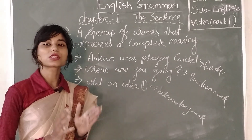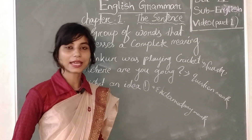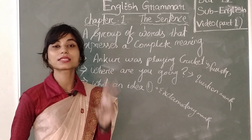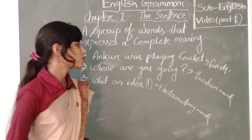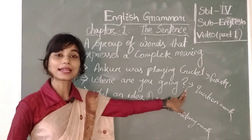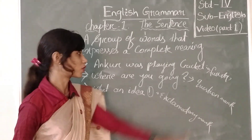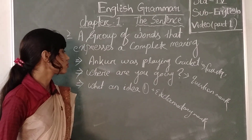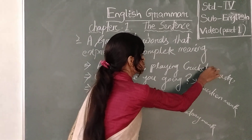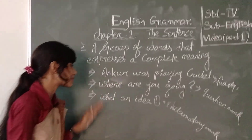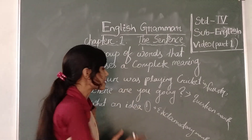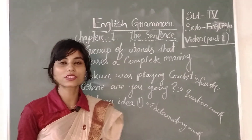If a sentence starts with a WH word or an auxiliary verb — that means a helping verb — and if the question starts with such words, you may put a question mark at the end of the sentence. As I already told you about the full stop, in the end of the sentence you can put a full stop, and you can see in these three sentences they are all conveying a complete meaning.